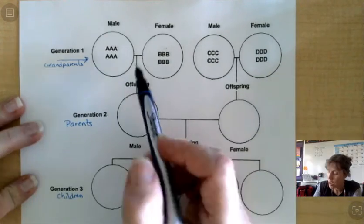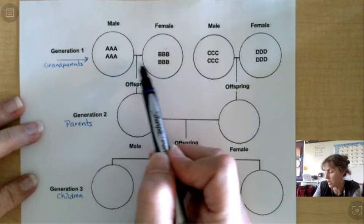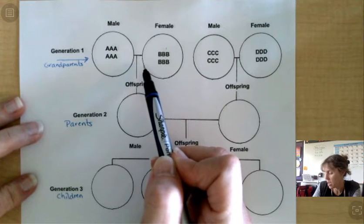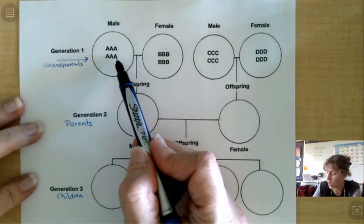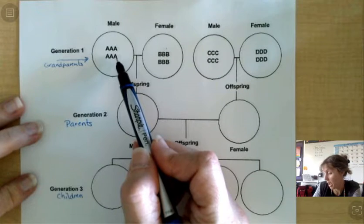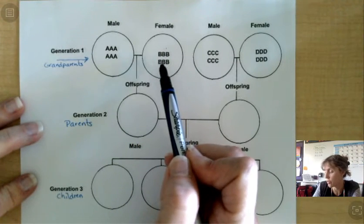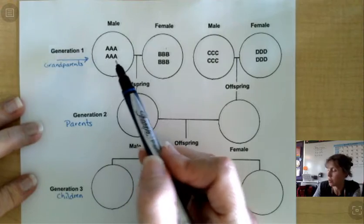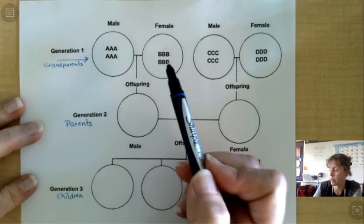So to find the offspring that these two make when they get together, you have to take three traits from the male, half, and three traits from the female.